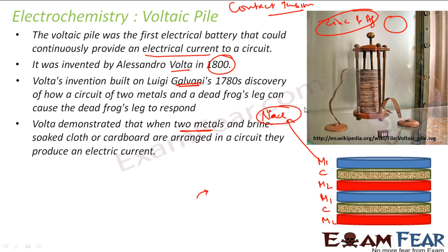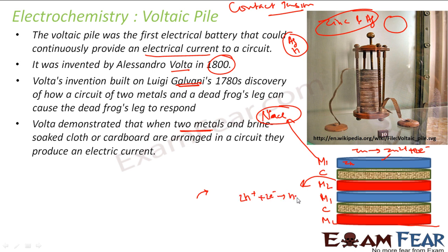When the top and bottom of the pile were connected via a circuit, electricity was produced. At the zinc plate, oxidation occurred: Zn → Zn²⁺ + 2e⁻, since zinc is more stable in its +2 form. At the silver plate, hydrogen ions accepted electrons to form hydrogen gas. Both oxidation and reduction were occurring, allowing current to flow.